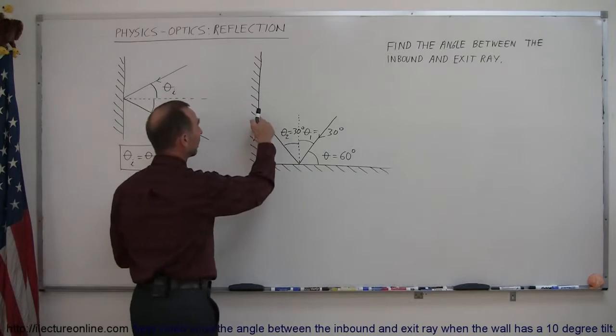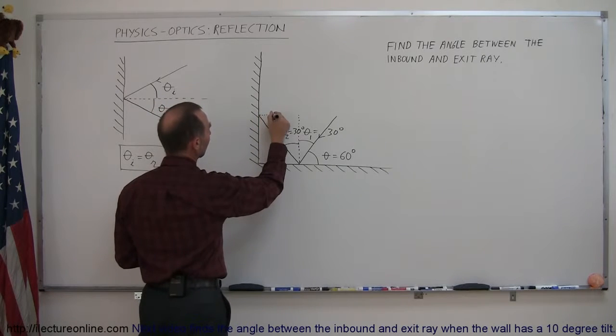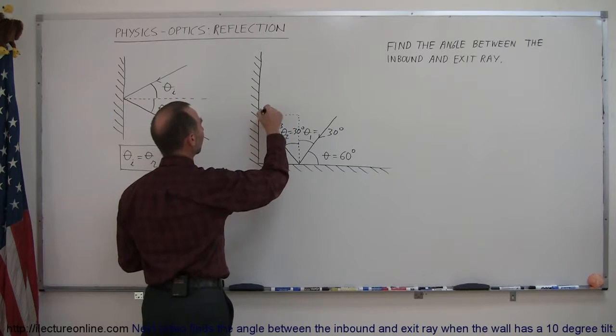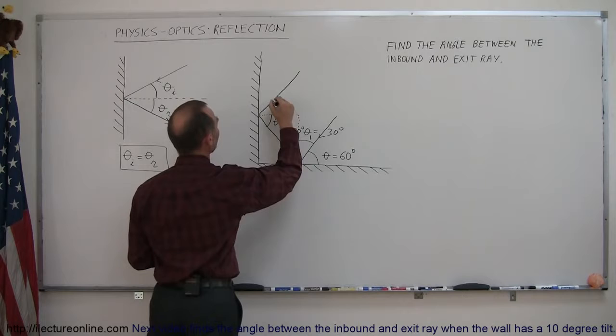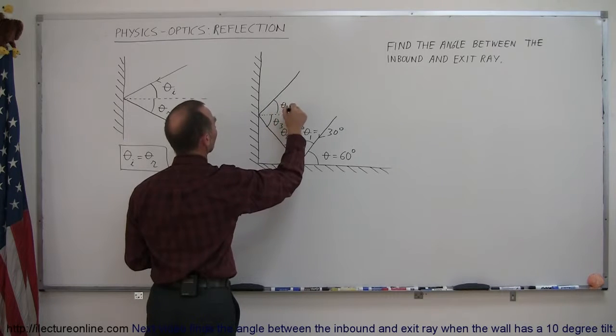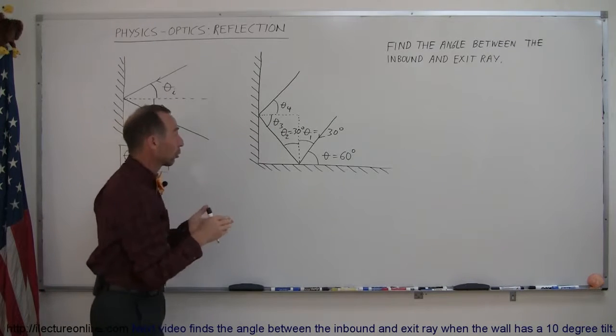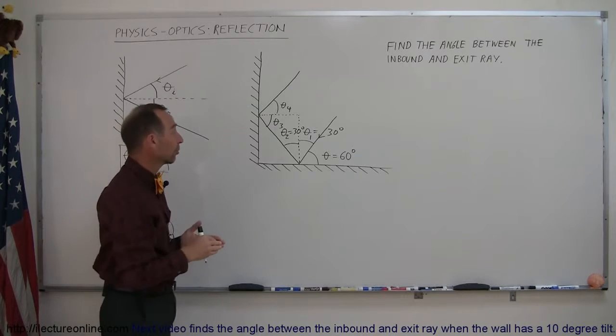Okay, at that point, since it hits the wall right here, we're going to draw a normal line over here, and then we can say that this here is theta sub 3, and then this ray will reflect in this direction, and then this angle will then be called theta sub 4. And of course, because of the reflection, we know that theta sub 3 must equal theta sub 4. The question is, how big is theta sub 3?